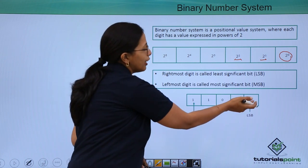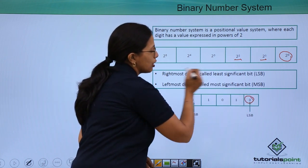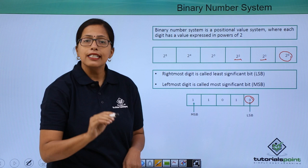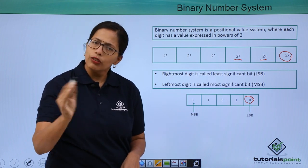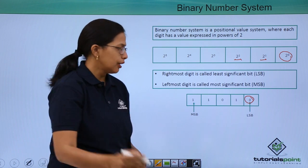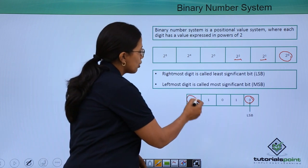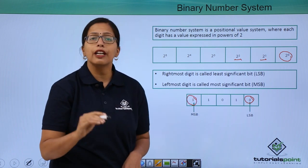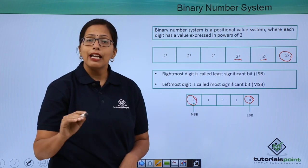Just remember that the rightmost digit is called the least significant bit. It might be 0, it might be 1, but it is called the least significant bit, and the leftmost is called the most significant bit or the MSB.